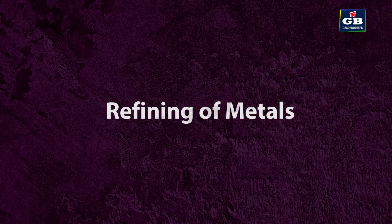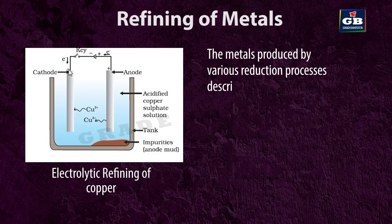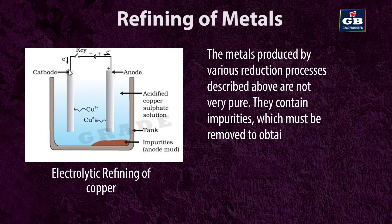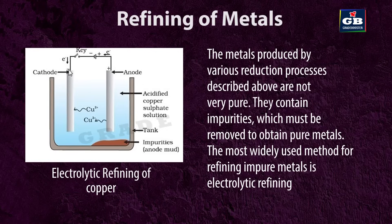Refining of metals: The metals produced by various reduction processes are not very pure — they contain impurities which must be removed to obtain pure metals. The most widely used method for refining impure metals is electrolytic refining.